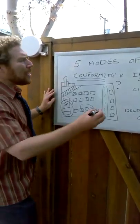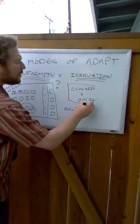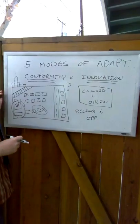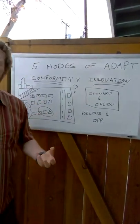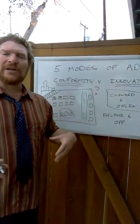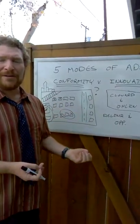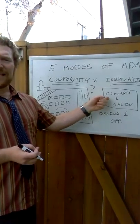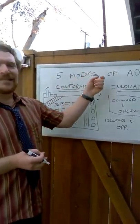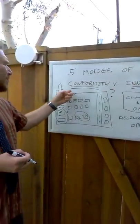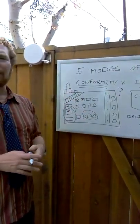The point being, Cloward and Olin helped solve the dilemma that Merton created by not specifying who innovates, who conforms, who becomes a ritualist, who becomes a retreatist, and who rebels. Cloward and Olin provide the answer. How people adapt to strain depends on the opportunities available to them.